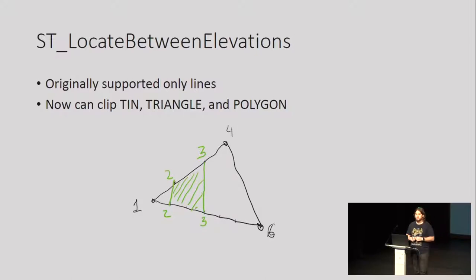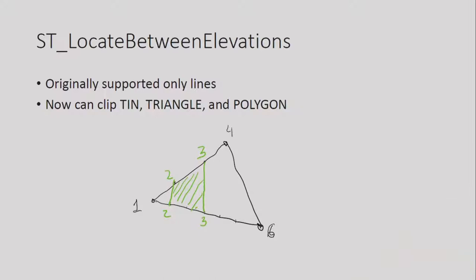After you have your triangulation, what you want to do is slice it. You've got a hill, and to slice it you use a function called ST_LocateBetweenElevations. You say: from this TIN, I would like to cut the part that is between, say, 2 and 3 meters. Originally it was used to cut line strings — if you had a route annotated with elevation, you could cut parts above or below some altitude. But now you can also do that with polygons and with TINs, and after you do that, you can visualize them as contour rings.